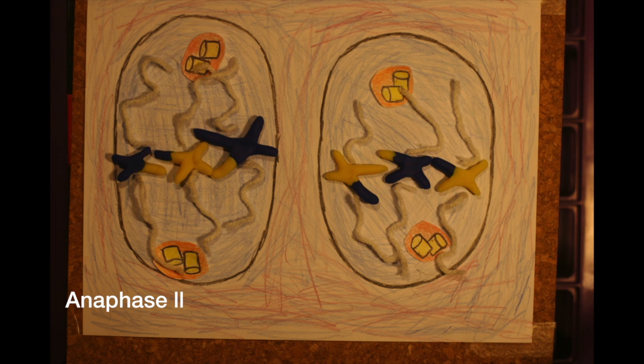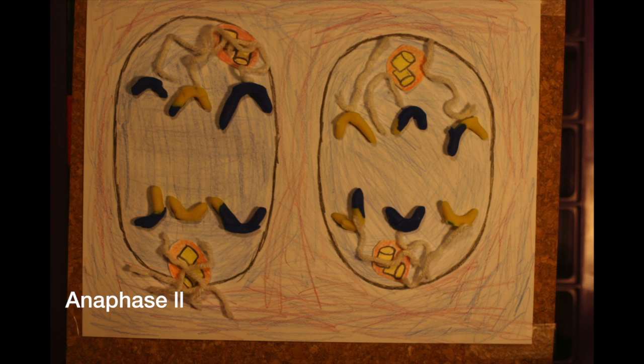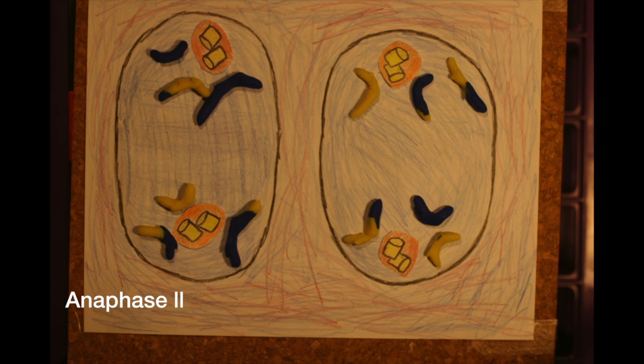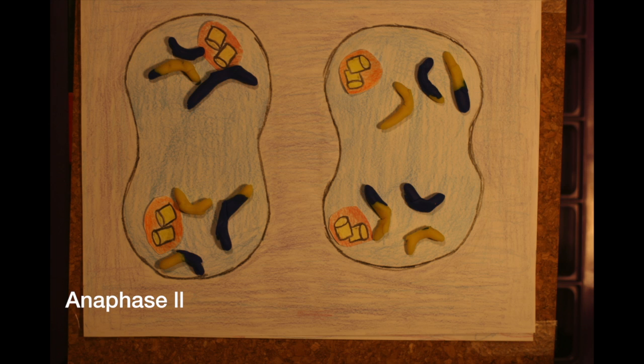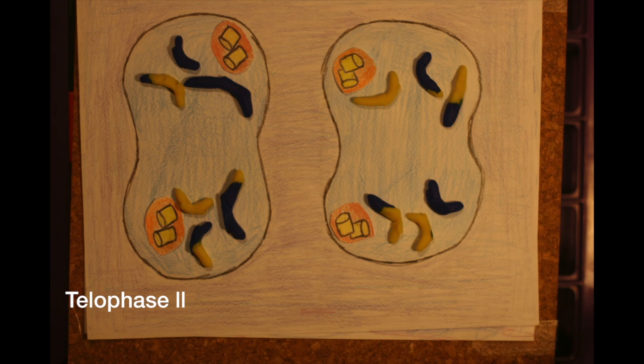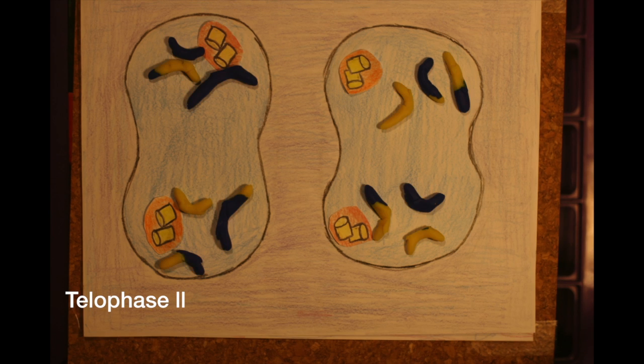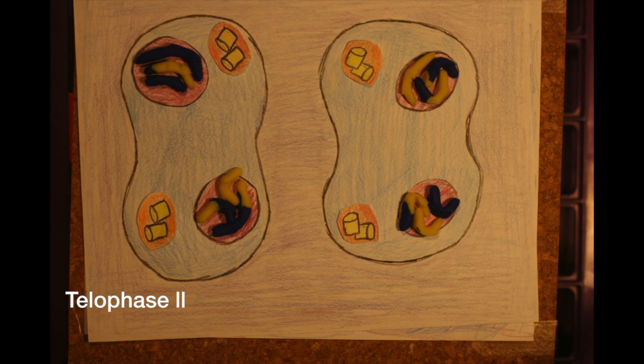Anaphase two then allows the microtubules from the centrosomes, which contain two centrioles, to pull apart each chromosome into single chromatids. Once each chromatid reaches its respective pole, telophase two can occur, where the nuclear envelope takes shape once again.